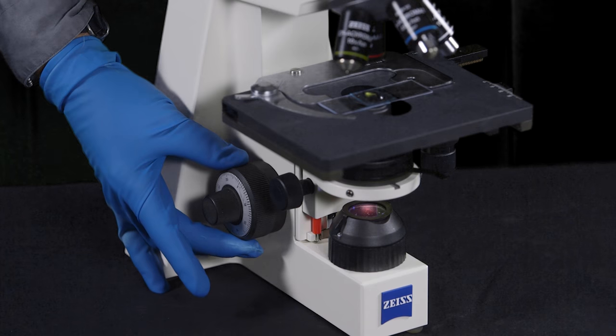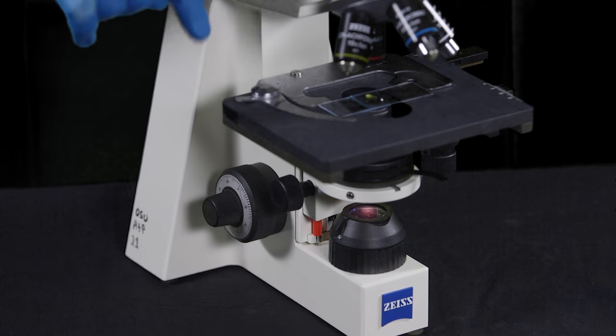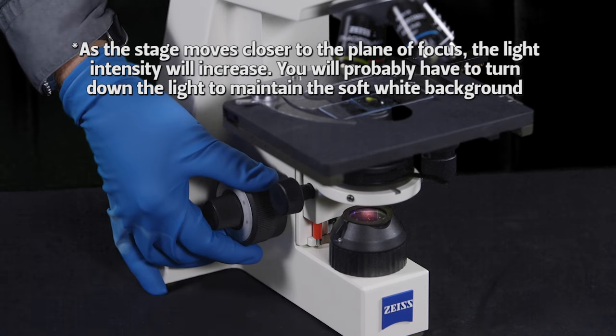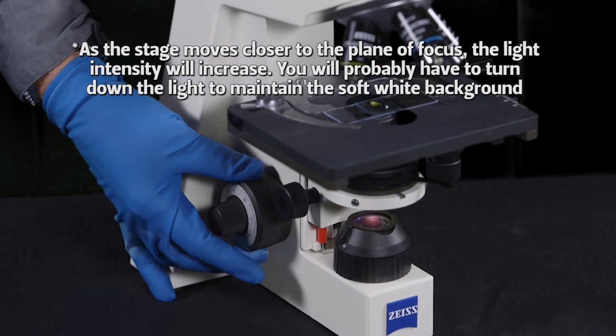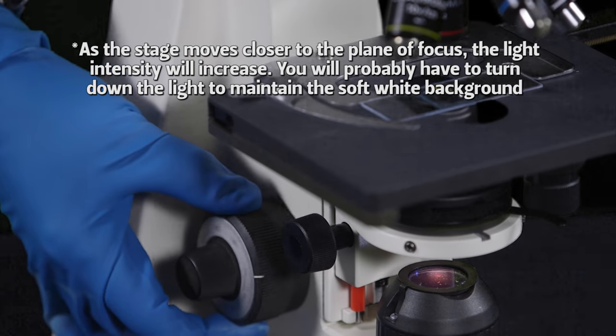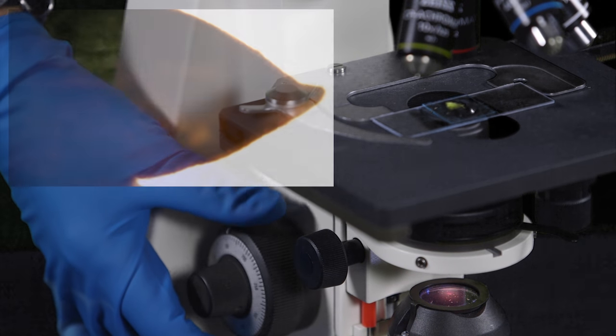When you are looking through the lowest power objective, you will be using the course focusing knob. Since you've lowered the stage all the way, you are slowly raising the stage until your specimen comes into focus.